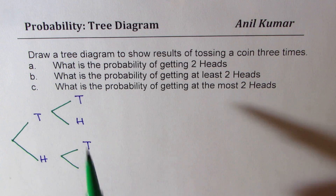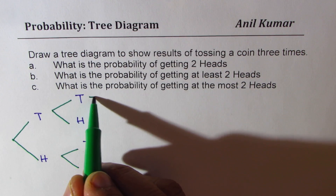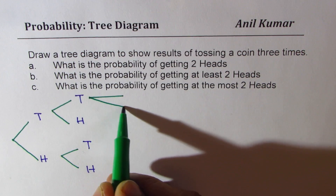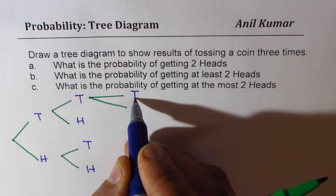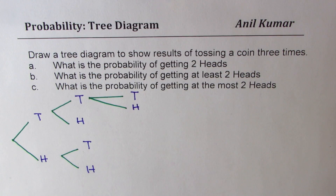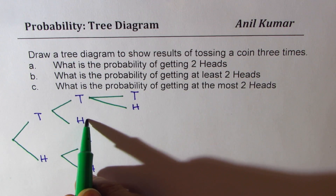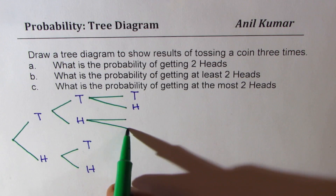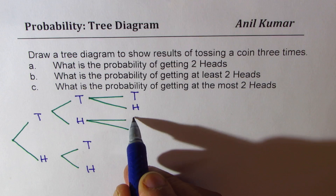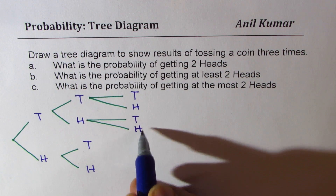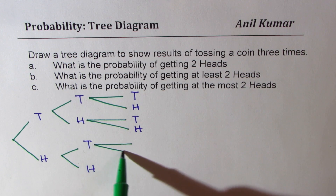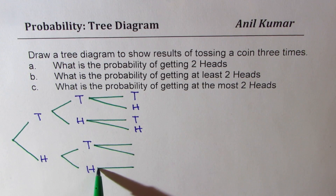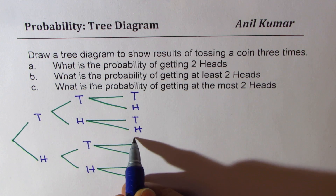In the third toss we may get tail or a head. Let me write down here also — we may get tail or a head. In all the cases we might get tail or a head, since the probability is equally likely.